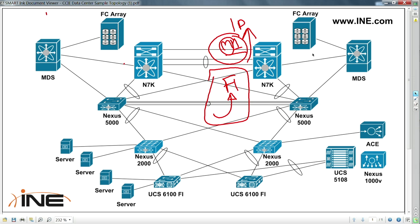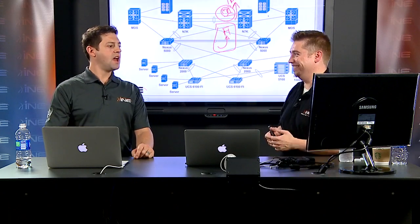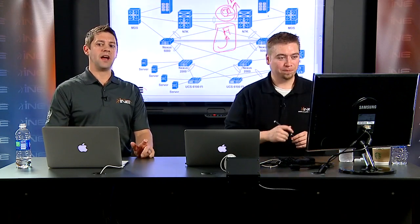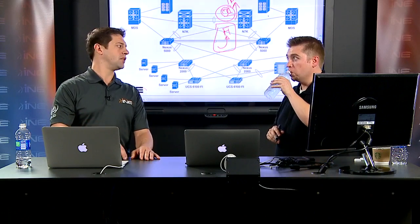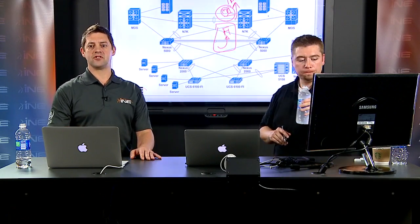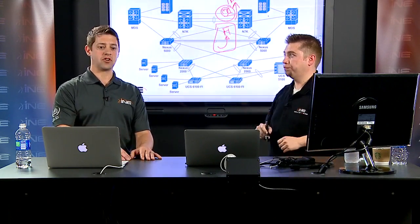The F1 module — the 'F' relates to FabricPath — is a very high-performance Layer 2 only switching module. The M1 is your multi-layer module for Layer 3, but it's not as high performance as the F1 because it's a feature-rich module. You really have to have both to get the overall view of how the platform fits into different designs. Cisco lists both on the exam blueprint for exactly this reason, and these are 10 GigE cards, which are not cheap.